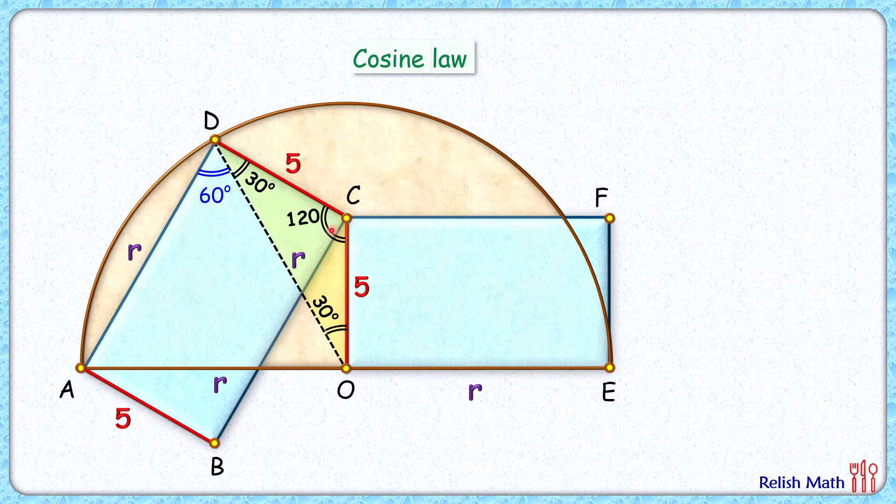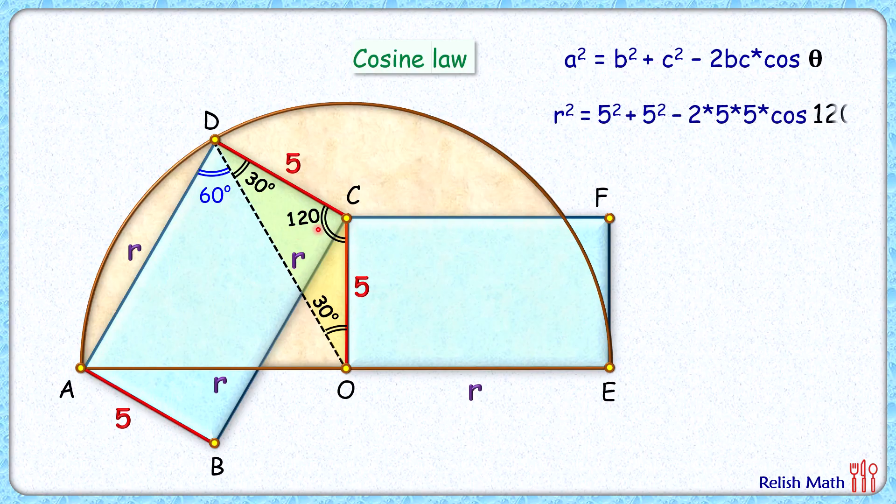Now in this yellow triangle applying cosine law, that is a² = b² + c² - 2bc cos θ. A, B, C these are the side lines of the triangle and θ is angle between side lines B and C. Here A is r, B and C those are 5 and 5, and θ is 120. Cos 120 that's minus half.